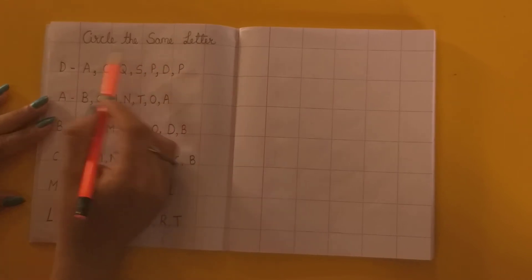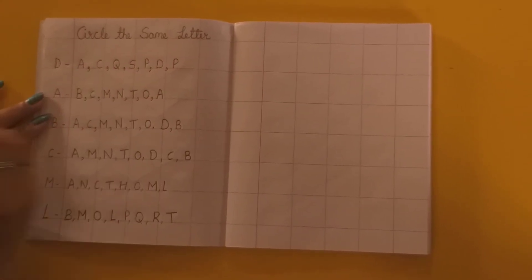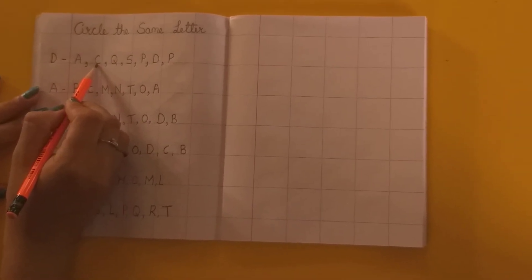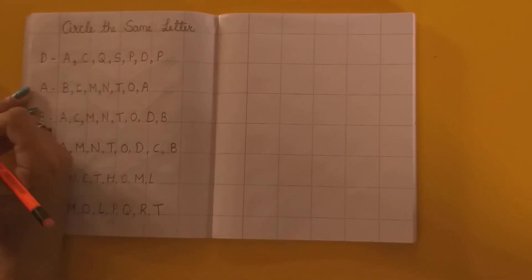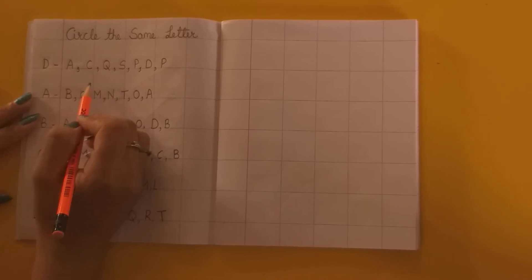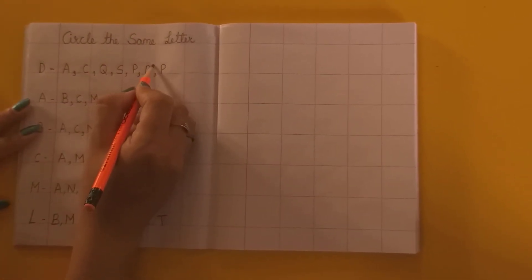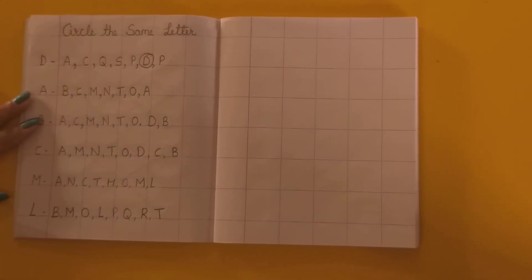D. Toh ḍundou yaan pe D kidhar hai? Kaan hai D? Batao. Yeh D hai? No. This is A. Yeh? Nayin. Yeh bhi nahi hai. Yeh toh Q hai. Yeh S hai. Yeh P hai. Yeh raa D. Dekho yaan chupke baitha hai. Ham isko pukar liya.